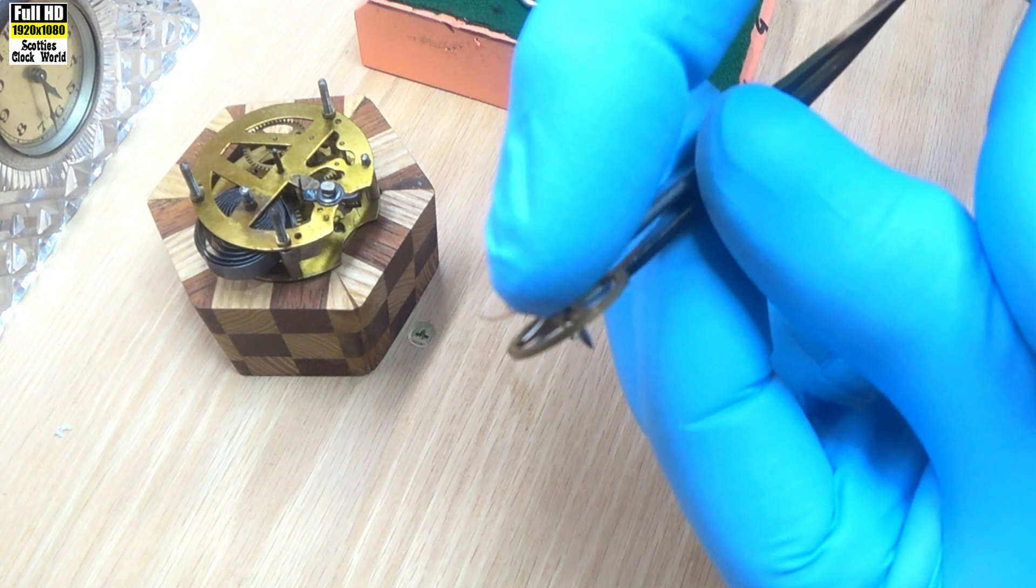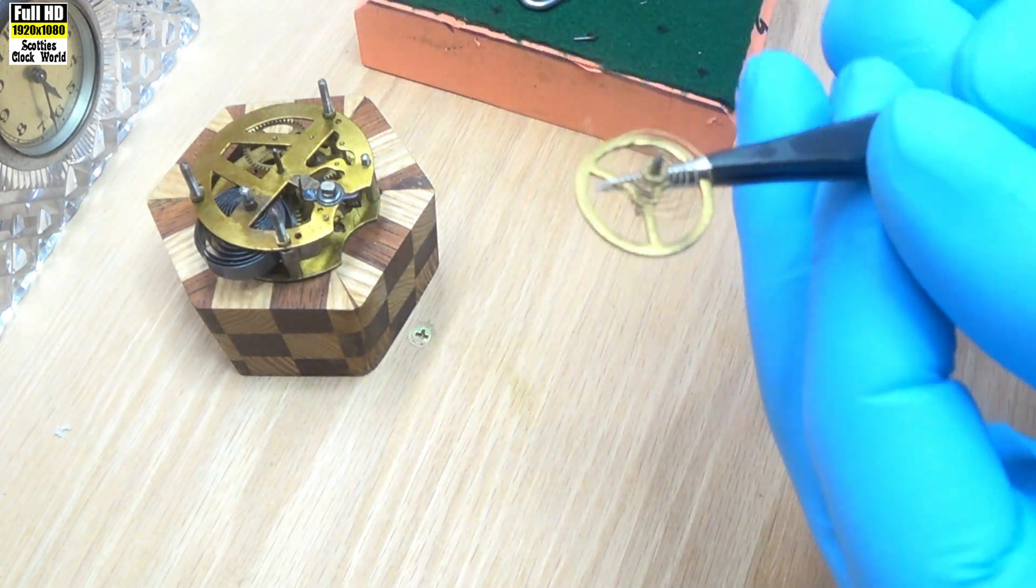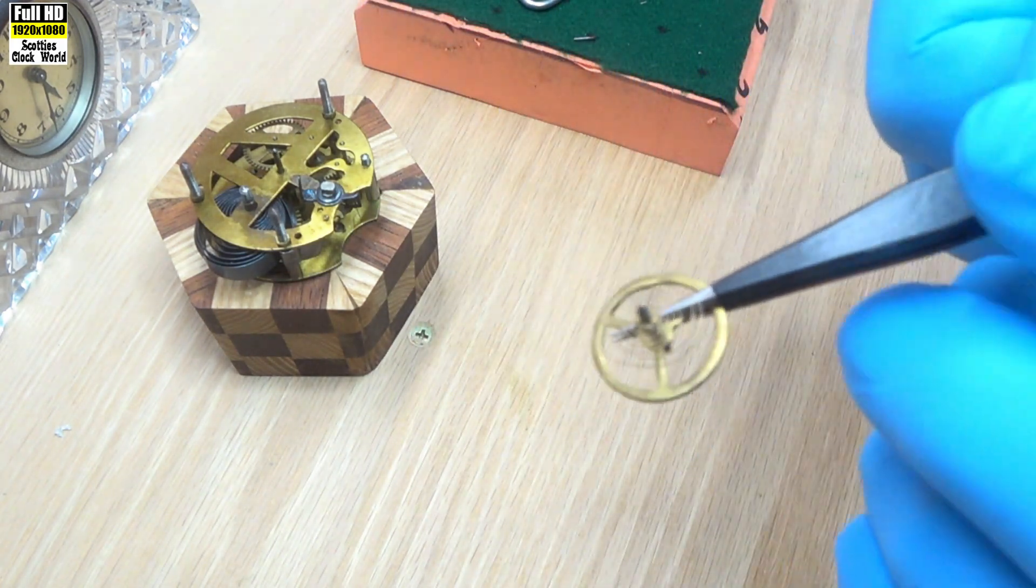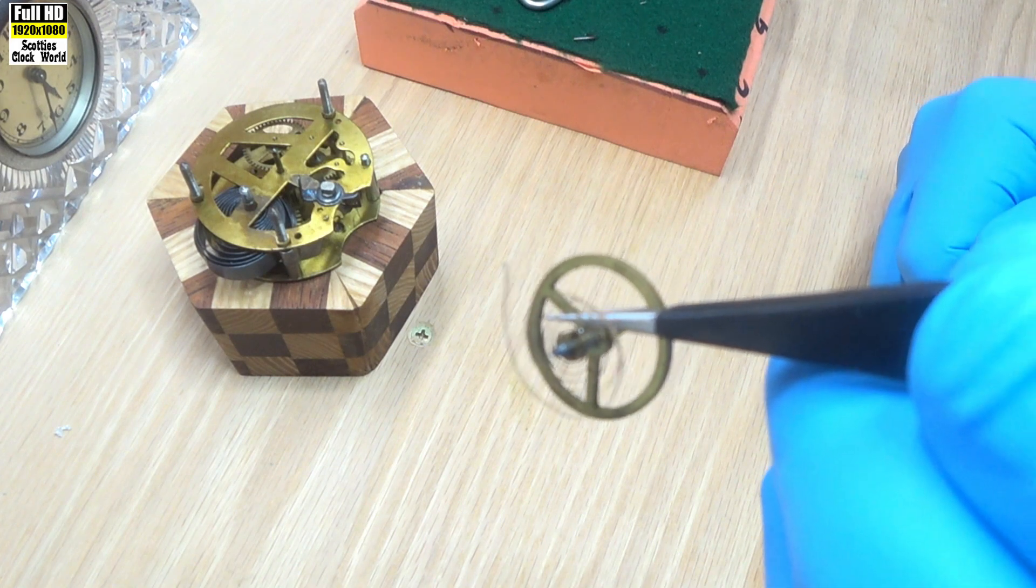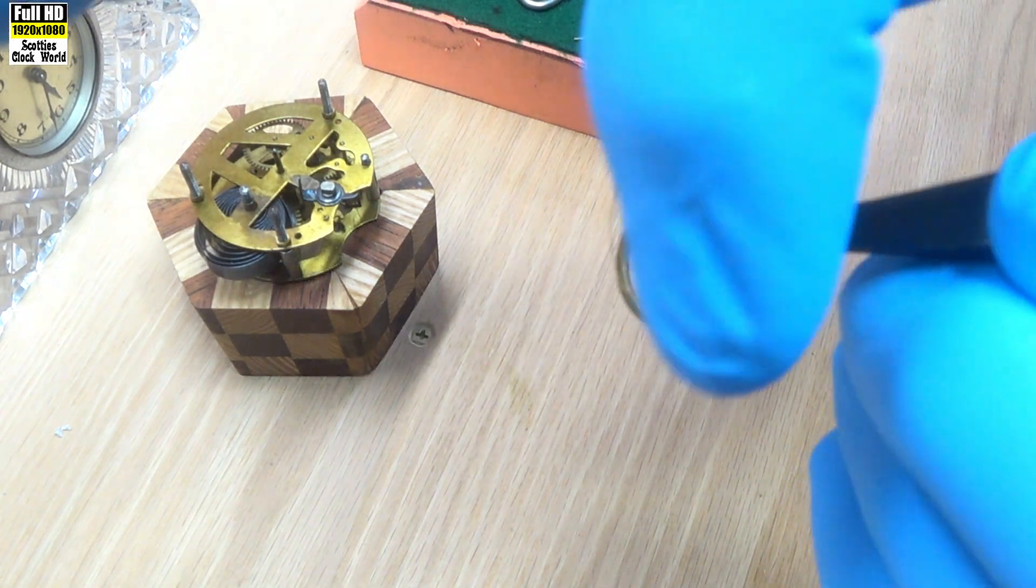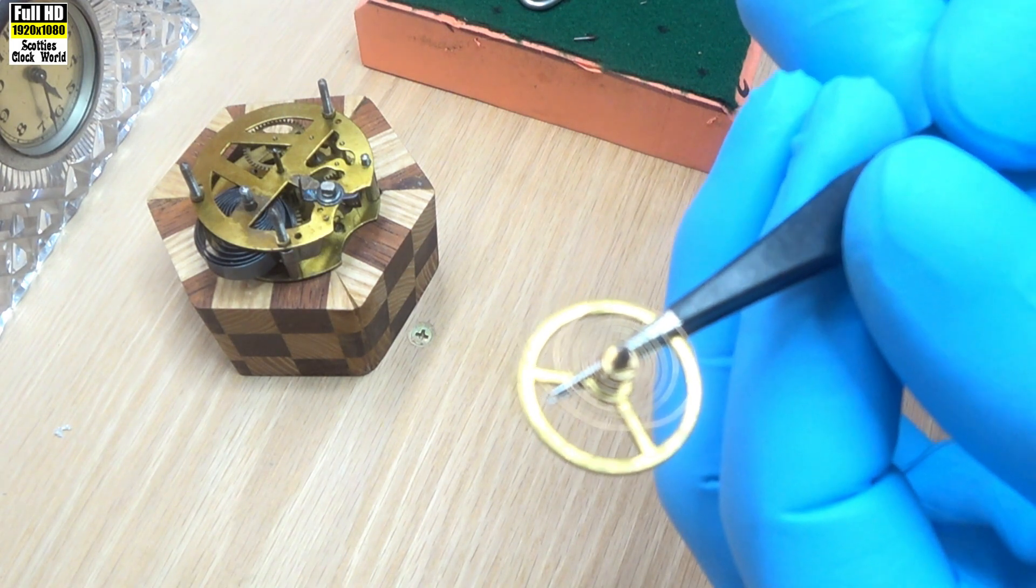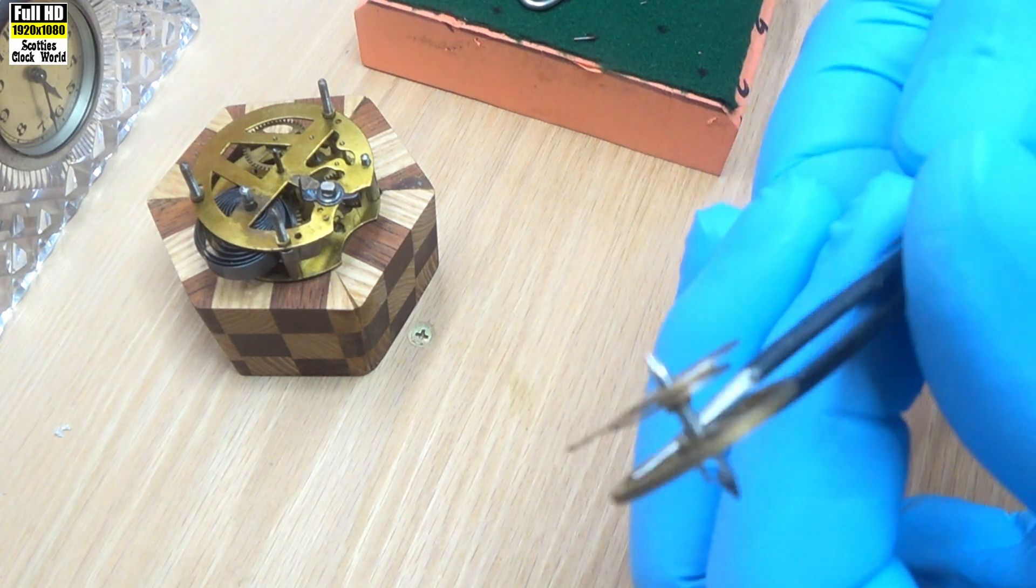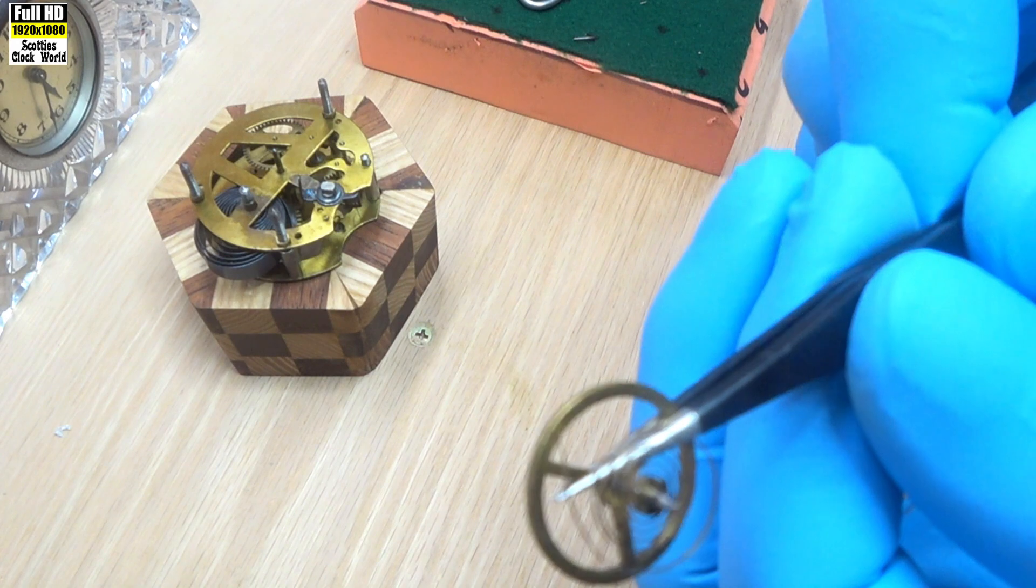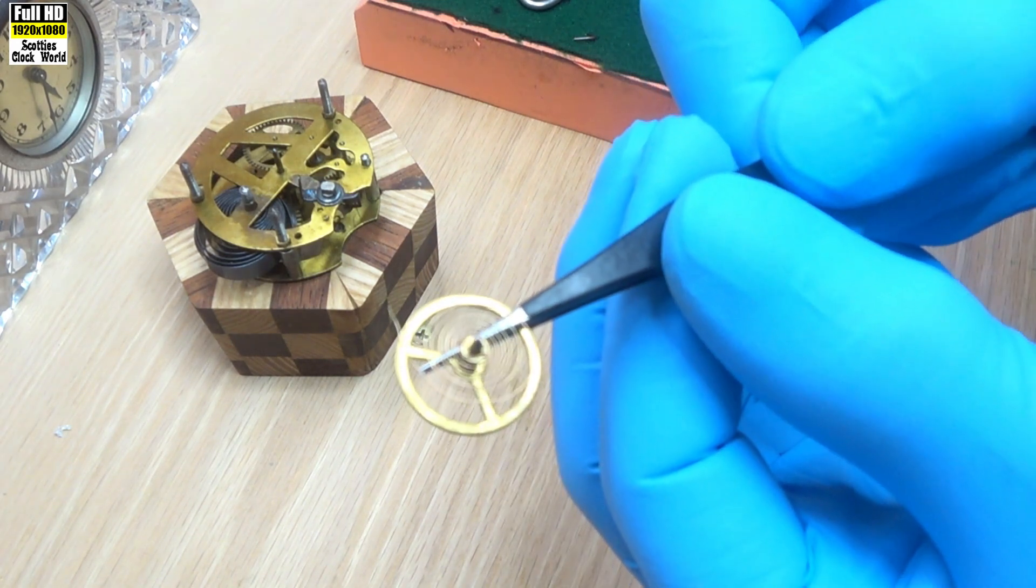You can see it's high on this side, starting from about halfway around that turn and running back that way. What we have to do is flatten that spring before we put it back into the movement. This is how that's done.